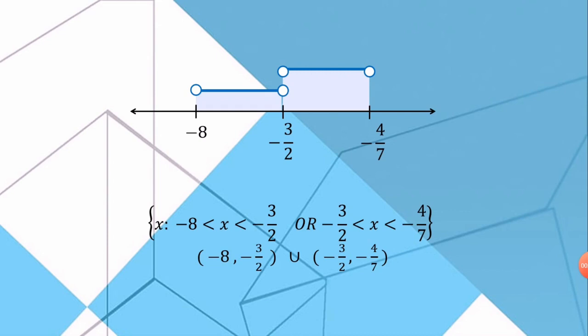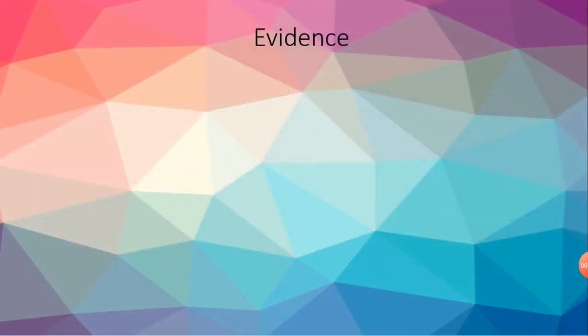If we write our answer in the set notation, our answer will be (-8, -3/2) union (-3/2, -4/7) in curve brackets.